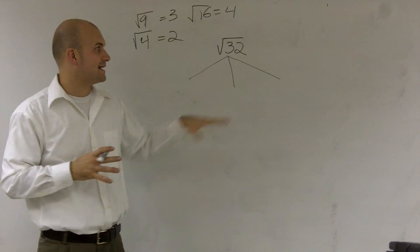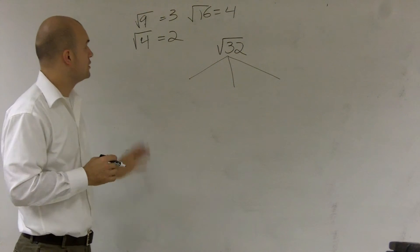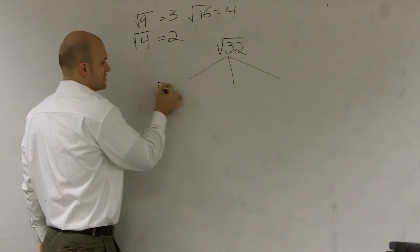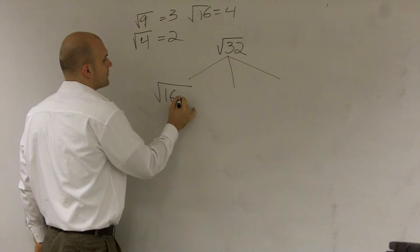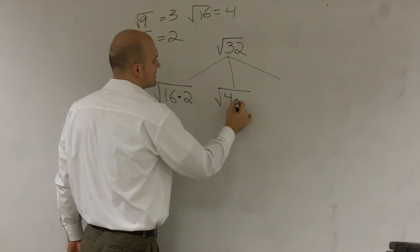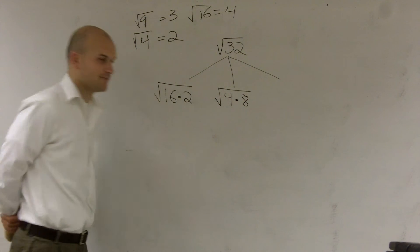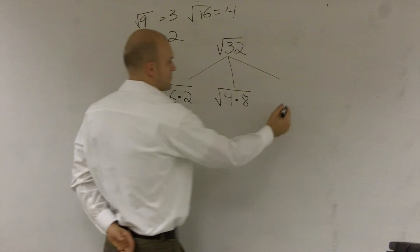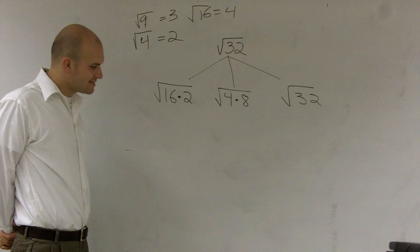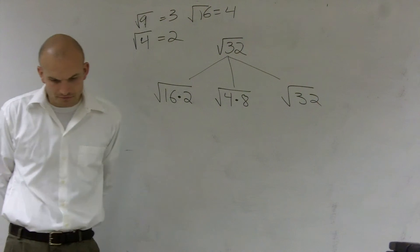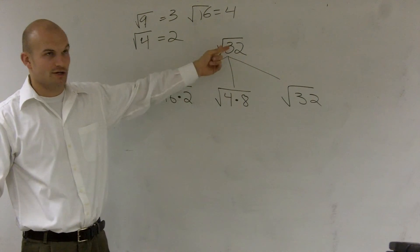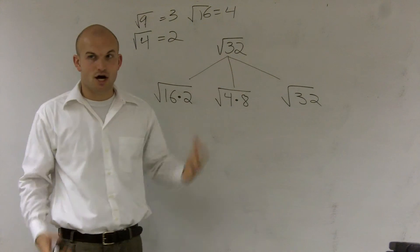I'm going to manipulate this so that it has one of these square numbers. So there's two different ways I could rewrite this. I could rewrite the square root of 32 as the square root of 16 times 2, or you could rewrite it as the square root of 4 times 8. That's two different ways you could do this. And that's going to be my third method over there. So now what we have is we have two different ways. These are two factors. 16 times 2 is 32, and 4 times 8 is also equal to 32.